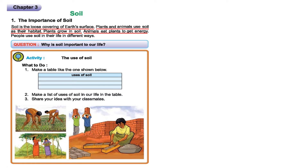Now we have an activity. If you look at this activity it says the use of soil — that means where do you use the soil. In the picture you can see two farmers are trying to cultivate some crops in the land. In the next picture two women are trying to collect some vegetables — we know vegetables grow in the soil. In the right part there is a picture showing people trying to make some bricks. We know we can make bricks with the help of soil. These are all the uses of soil.